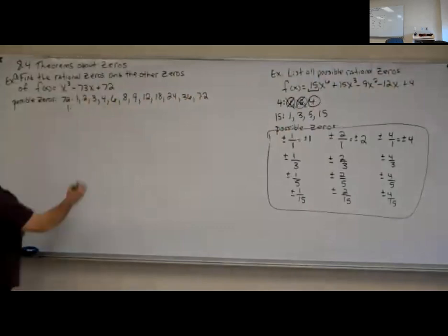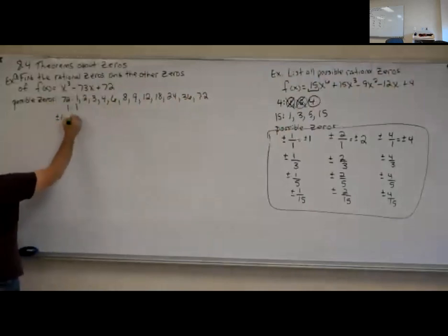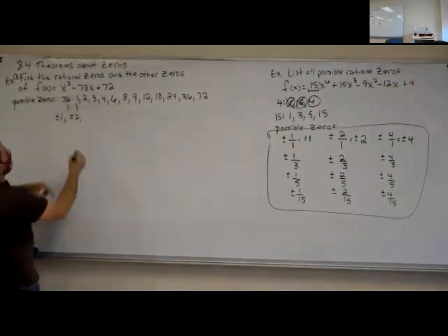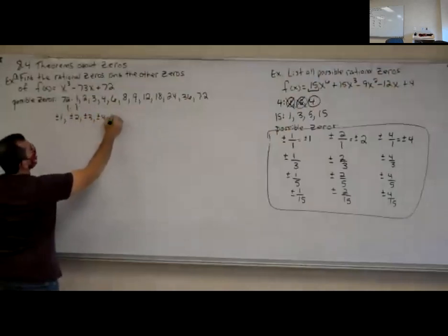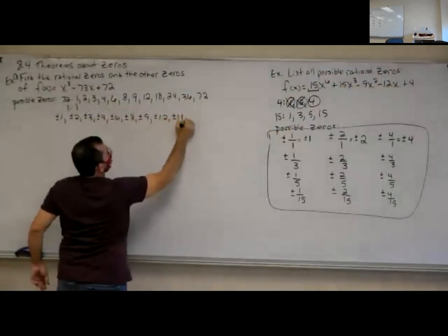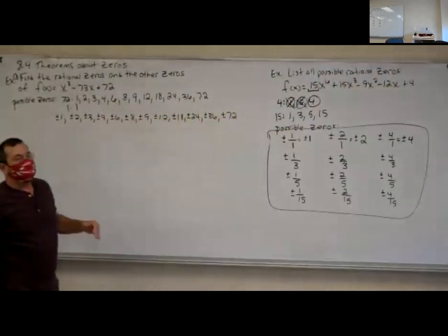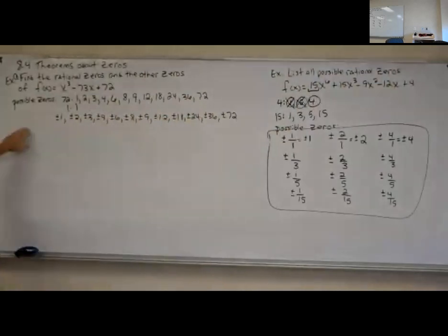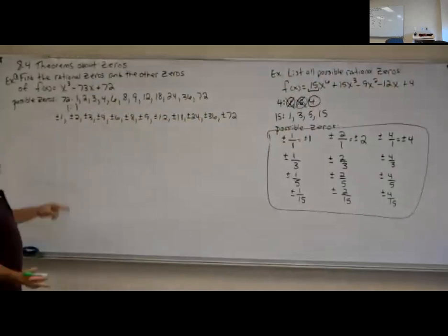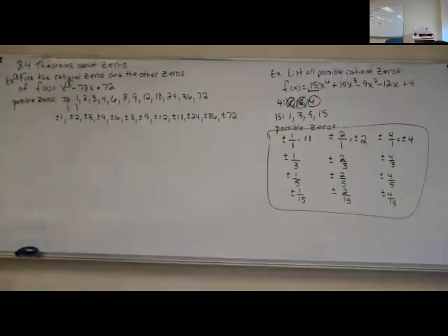The first number only had factors of 1. So my possible zeros are going to be plus or minus 1, plus or minus 2, plus or minus 3, plus or minus 4, plus or minus 6, all the way down these numbers. When you get a number like 72 that has a lot of factors, I am guaranteed for my rational zeros to be one of these numbers. It could be two of them, or all three could be rational zeros — I don't know. But I am guaranteed at least one of them.